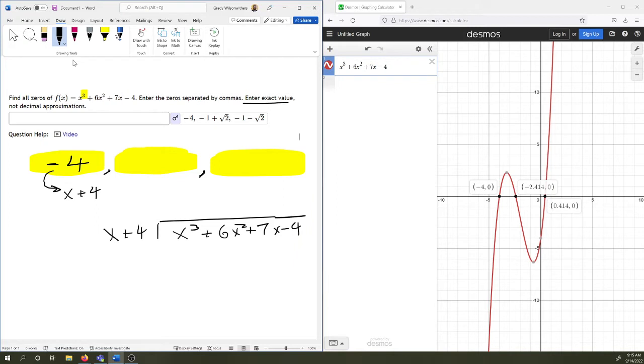So how many times does x go into x cubed? That would be x squared times. You want to be very careful with your signs here. Remember you're expecting to not get a remainder. If x plus 4 is a factor there should be no remainder here.